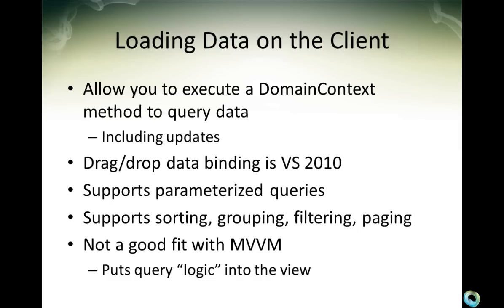Loading data on the client: you use the domain context object, call a load method on it, it goes and executes asynchronously, and populates the collection of data hanging off the domain context when that operation is complete. That collection does raise collection changed events so you can just directly data bind to it, and the UI will update as soon as the data is available — which is why you saw that hesitation where it loaded the grid empty and then the data popped in a moment later. Drag-and-drop data binding is available in Visual Studio 2010, whether you continue to use the domain data source generated by that or not.